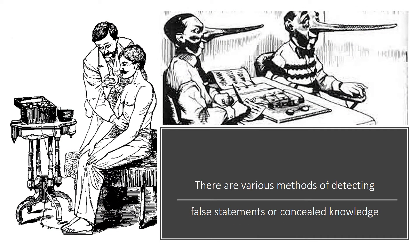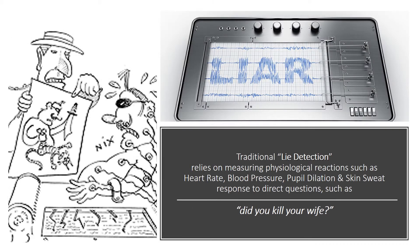There are various methods of detecting false statements or concealed knowledge. Traditional lie detection relies on measuring physiological reactions such as heart rate, blood pressure, pupil dilation and skin sweat response to direct questions, such as did you kill your wife?